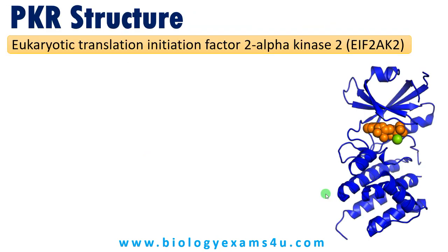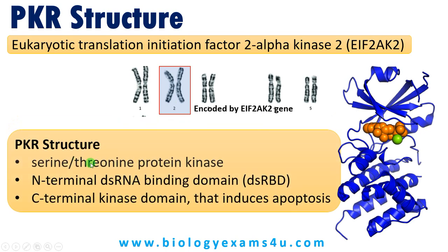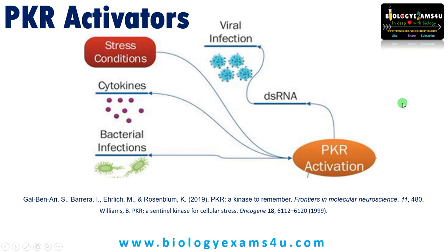Now let us see the structure of the protein. PKR is also called eukaryotic translation initiation factor 2 alpha kinase 2, or EIF2AK2. It is coded on human chromosome number 2 and encoded by the EIF2AK2 gene. It is a serine-threonine protein kinase, meaning it phosphorylates the hydroxyl group of the amino acids serine or threonine. It has an N-terminal double-stranded RNA binding domain and a C-terminal kinase domain that phosphorylates other proteins and ultimately induces apoptosis of a virally infected cell.